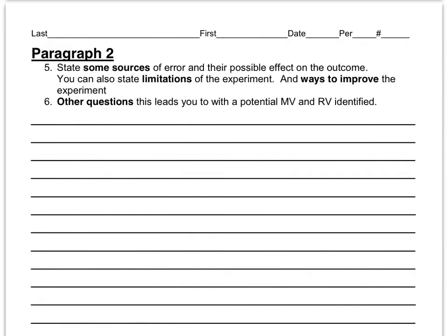And then finally, paragraph two, state some sources of error in your lab. Think of things especially that would have affected you directly. And if you know how they had an effect on the outcome, that would be awesome to state the way it affected the data. And another thing you could do is talk about limitations. That would be like the number of trials you've done and stuff like that that you didn't have much control over and you couldn't really change. So a number of trials is definitely a big one for that.